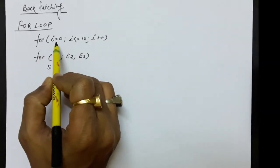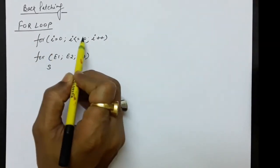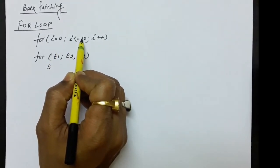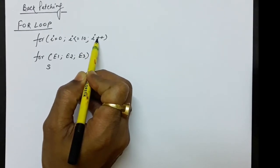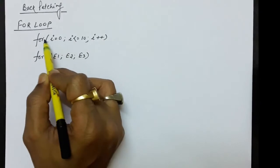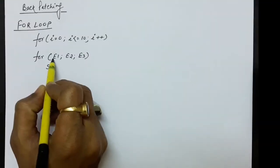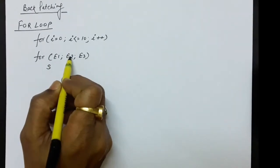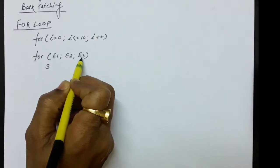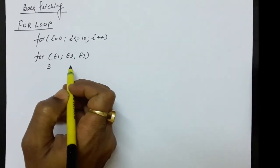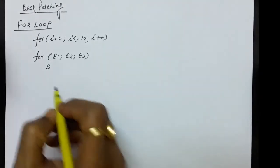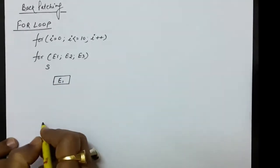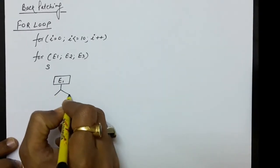The for loop usually has three parts: first is the initialization, next is the condition check, and the last part is the increment or decrement. In general form: for e1 (initialization), e2 (condition check), and e3 (increment or decrement). The flowchart shows e1 executes first, then there is a condition check.